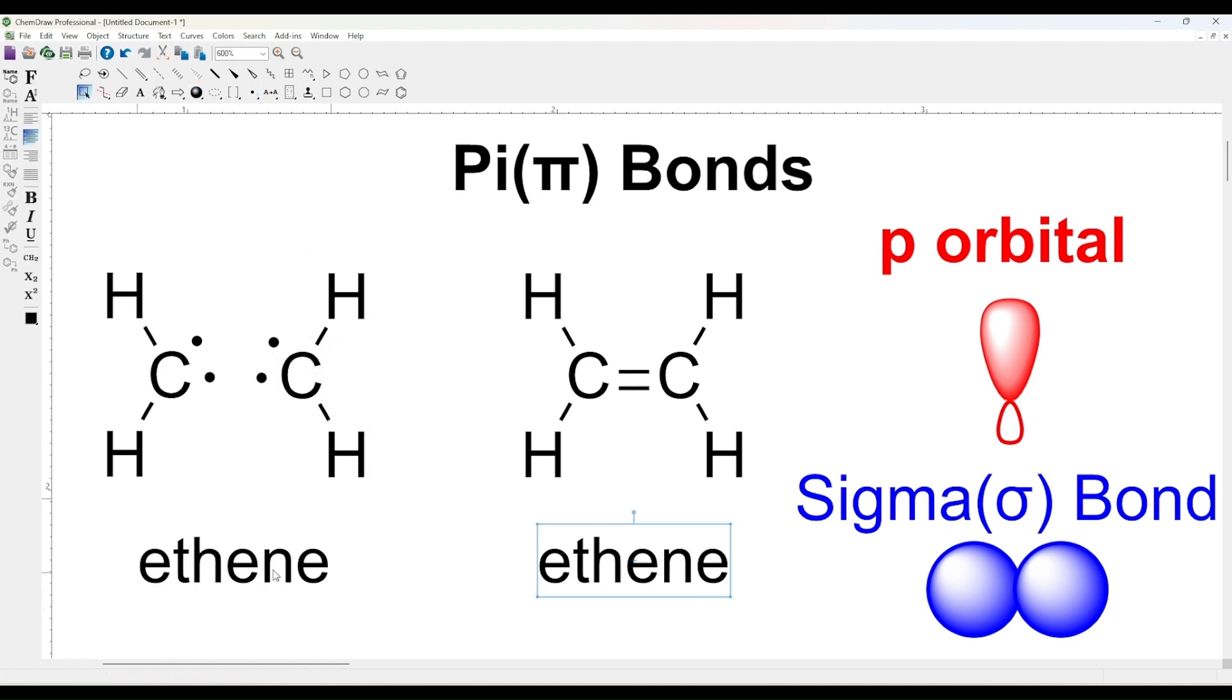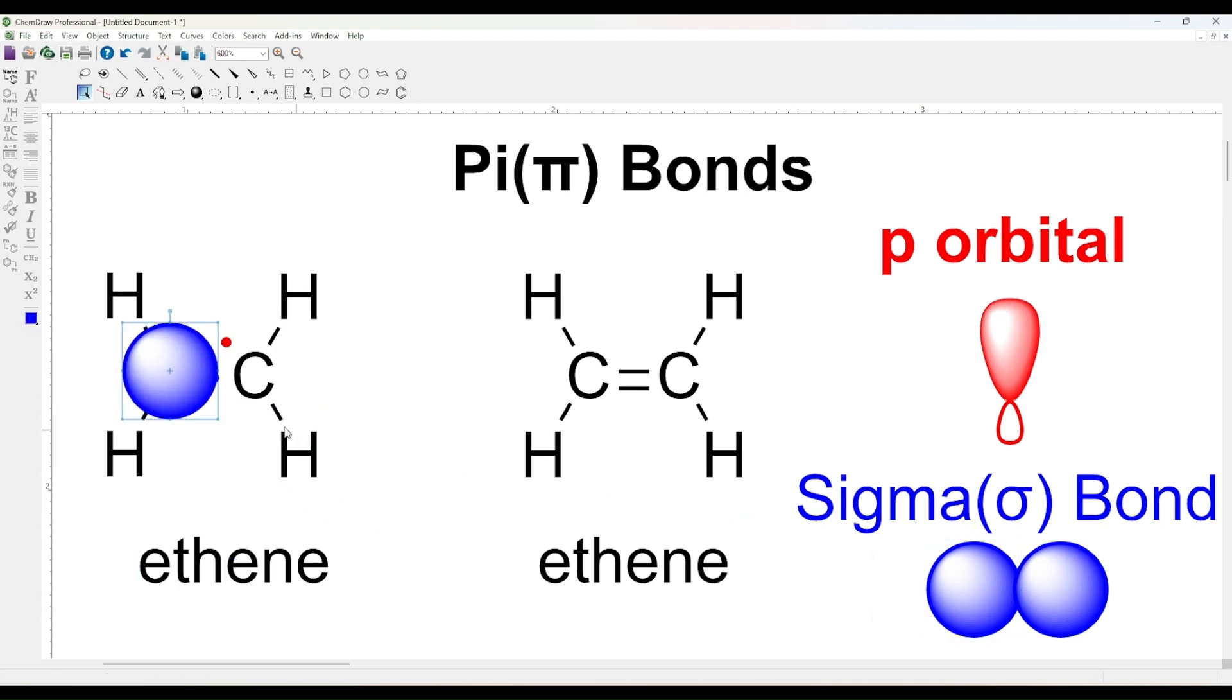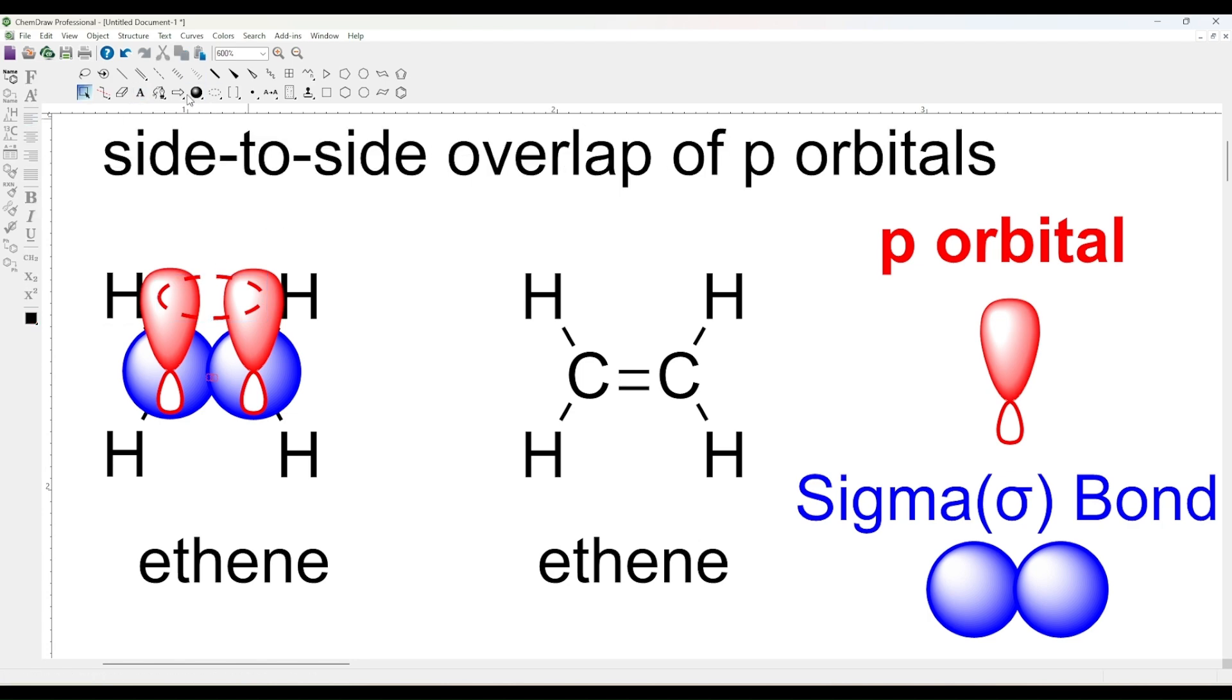In double bonds that are shorter and stronger than single bonds, there's one sigma bond and one pi bond.